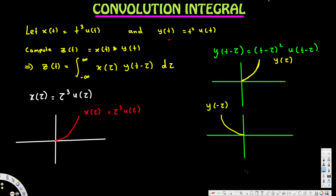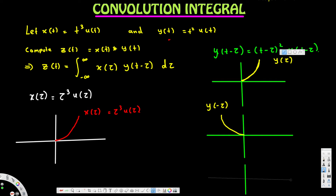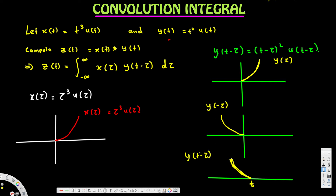Then y of t minus tau means it is shifted by t units. We can see that before it turned on at zero, but now it turns on at t, because the substitution of negative tau shifted to t. So we have found what y of t minus tau looks like — it turns on at t.